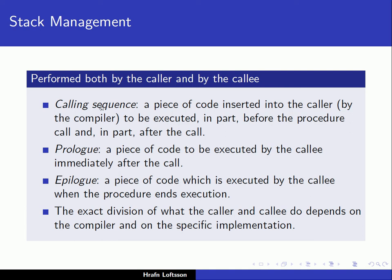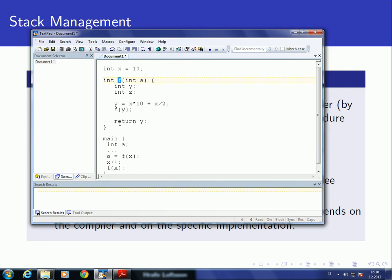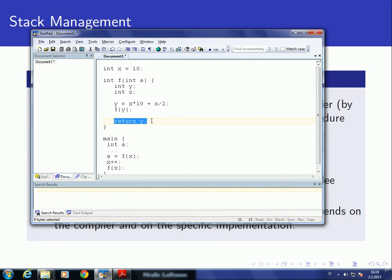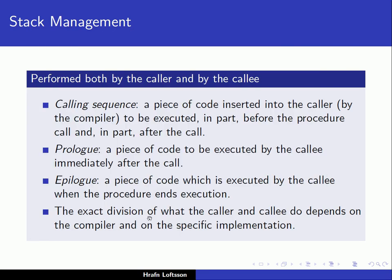There is something called a calling sequence — code inserted into the caller by the compiler, executed in part before the procedure call and in part after. There is also a prologue, which is code executed by the callee immediately after the call, and an epilogue, which is code executed by the callee when the procedure ends. The exact division of what the caller and callee do depends on the implementation and varies between languages and compilers.